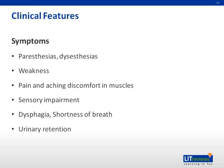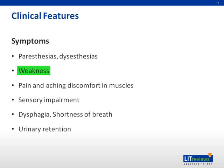GBS evolves as a rapidly evolving areflexic motor paralysis with or without sensory disturbance. Paresthesia and dysesthesia in toes and fingertips are often the initial symptoms. Weakness typically evolves over a few days. Pain is common in the early stages of GBS.